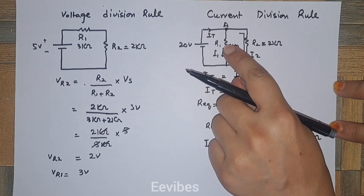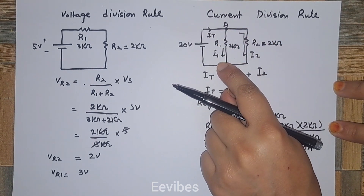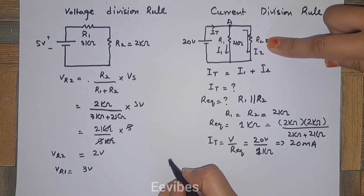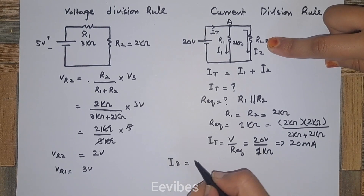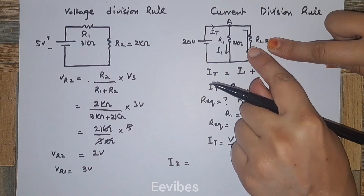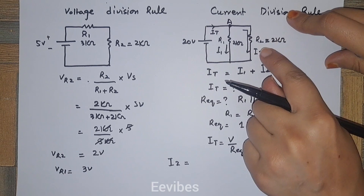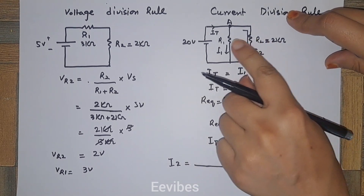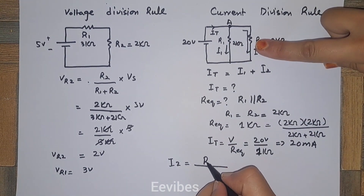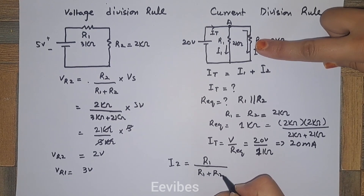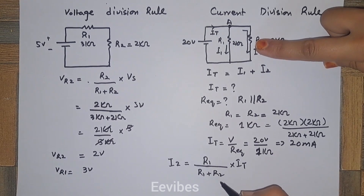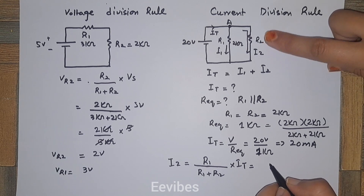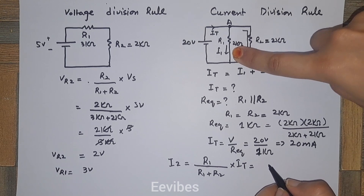At junction point A, the current will see two paths: either across R1 or R2. To determine I2, we use the current division rule formula. For the branch on which we want to determine the current, we consider the resistance of the opposite side — so we use the value of R1 in the numerator, then divide by R1 plus R2, multiplied by IT.